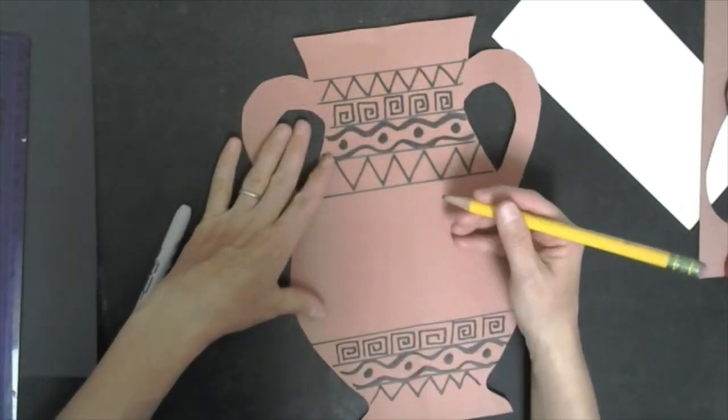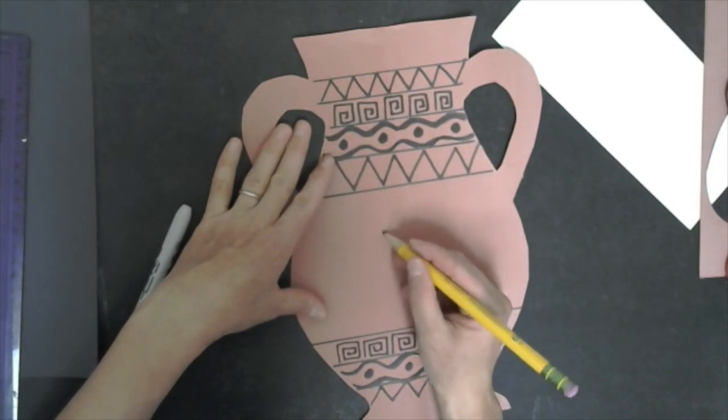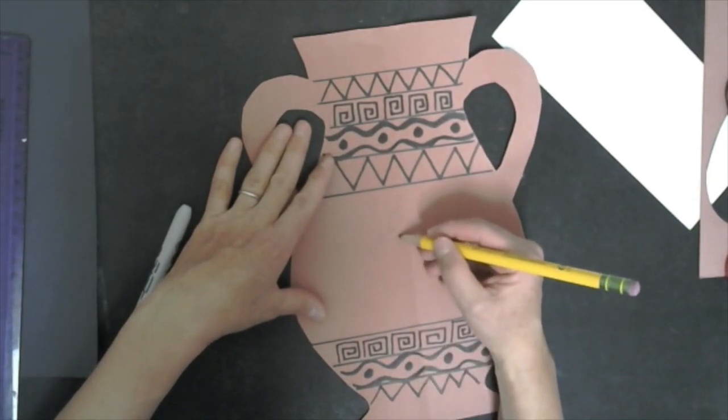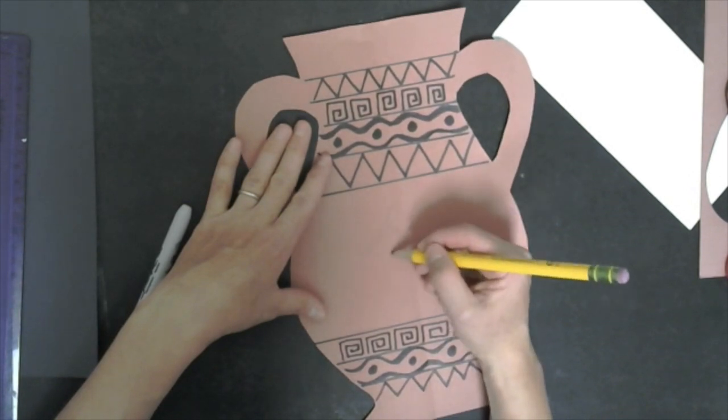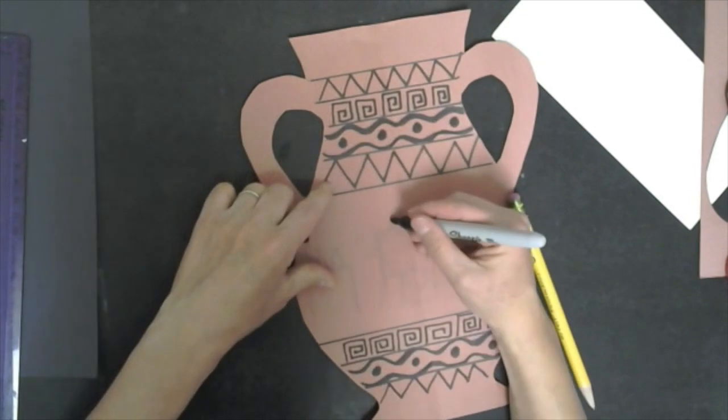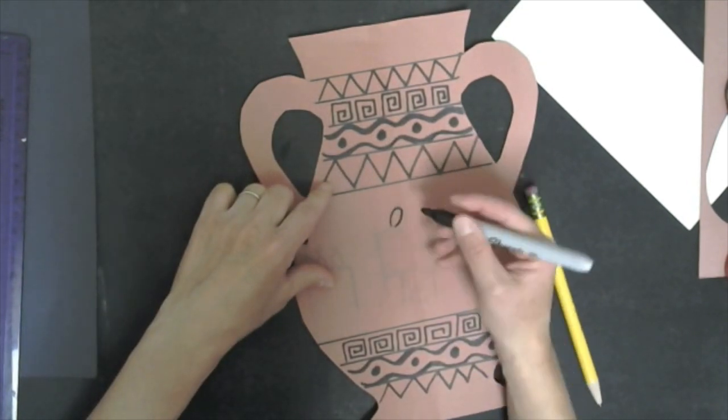Once you've done this you're going to start to create a scene of everyday life right now. So what is happening in your everyday life? What is the window into 2020? In my case I am drawing myself sitting at a computer.